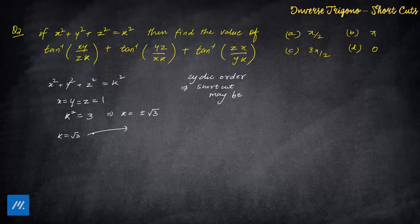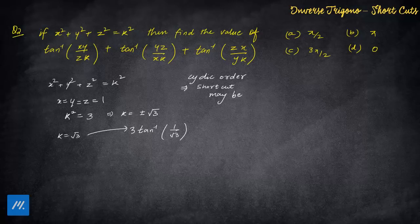Do not ask why I took √3 and not −√3; it was my preference to try positive first. The question becomes 3 × tan inverse (1/√3). tan inverse (1/√3) = π/6, so 3 × π/6 = π/2. The answer matches directly — question over. π/2 appeared and the answer was found.